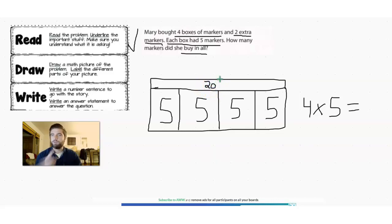So all of these together represent 20 markers that she got in those boxes. Now you might be tempted to stop here, but there is one more step. Remember these two extra markers?